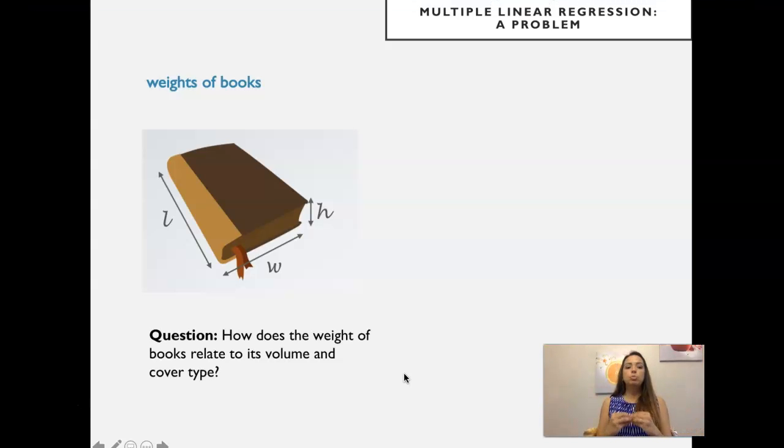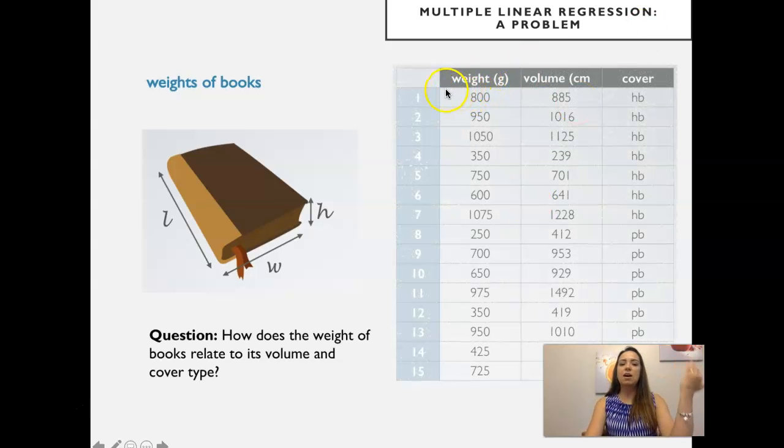Imagine you want to predict the weight of books based on its volume and cover type, because you can imagine that the weight of books will be related to its volume, but the relationship will probably be modified by whether or not the book has a paperback cover or a hardcover. So you decide to collect some data. You collected data on 15 books where you have their weight, their volume by multiplying the three dimensions length, width, and height, and you also had information on the type of cover that the book had.